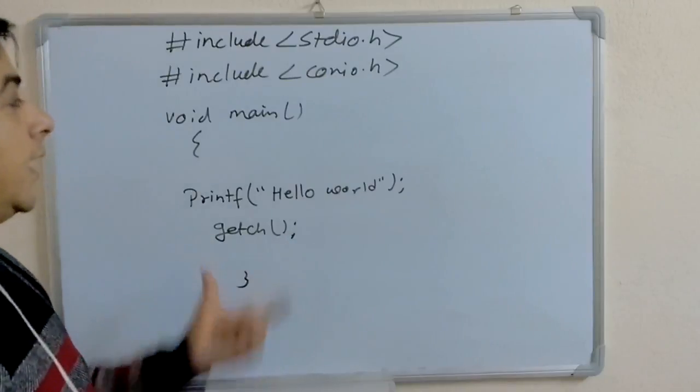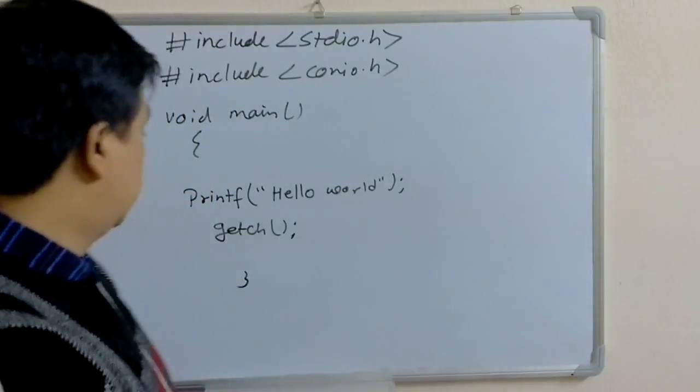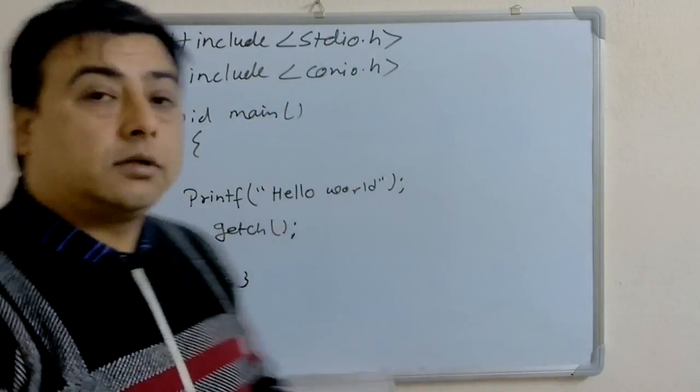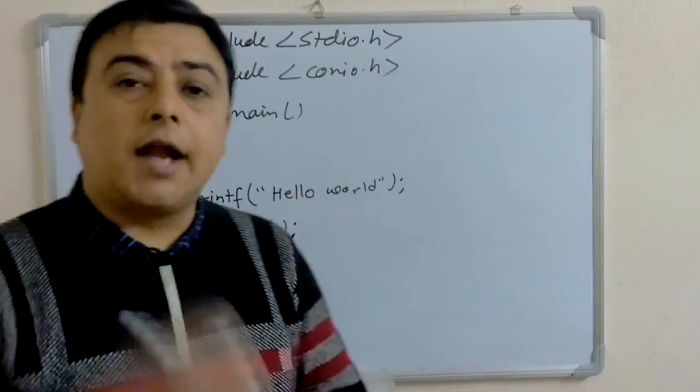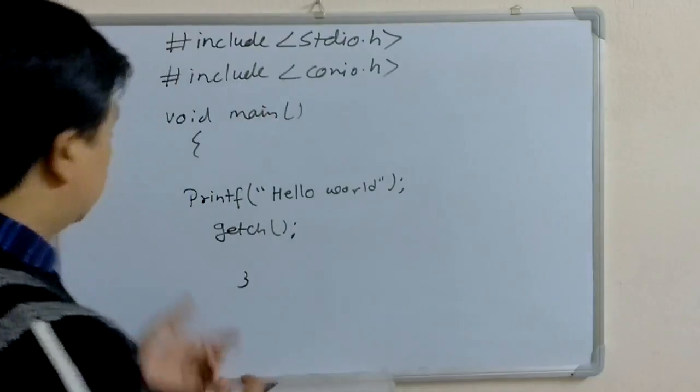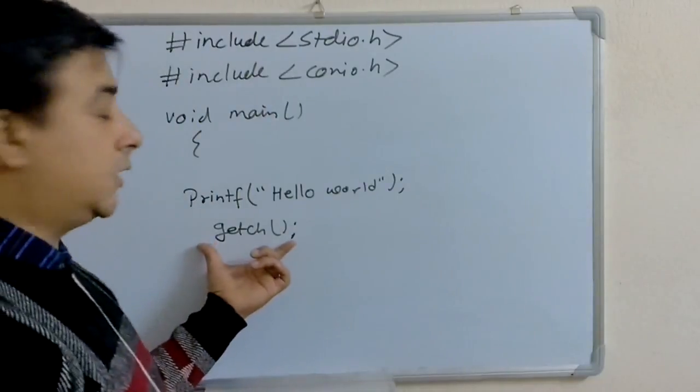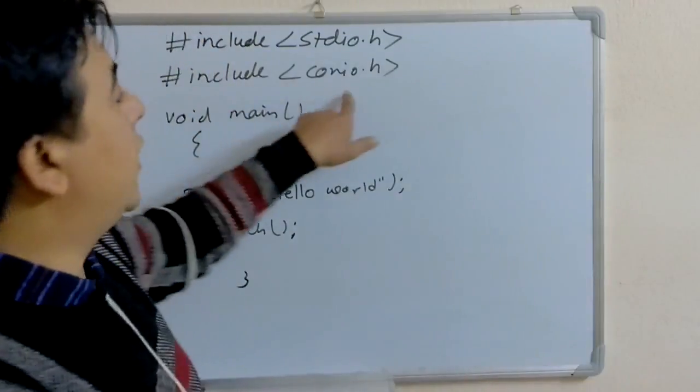This getch function is used to hold the message on the screen until and unless we press any key. So, to use this getch in our program, we have to include conio.h.